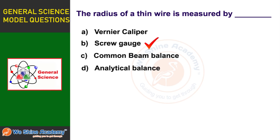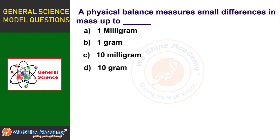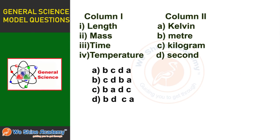The next question is: A physical balance measures small differences in mass up to — Option A: 1 milligram, Option B: 1 gram, Option C: 10 milligram, Option D: 10 gram. The answer is Option A: 1 milligram. A physical balance can measure mass differences up to 1 milligram.